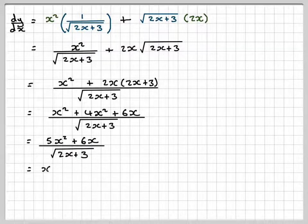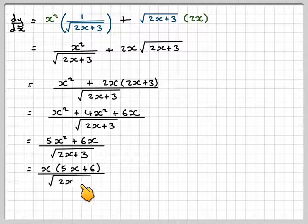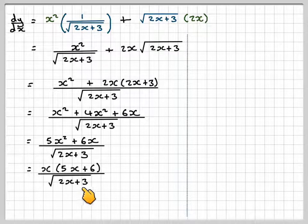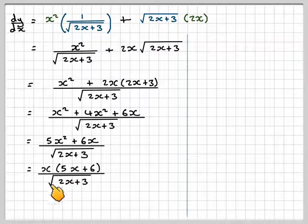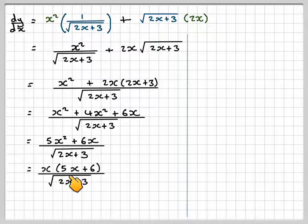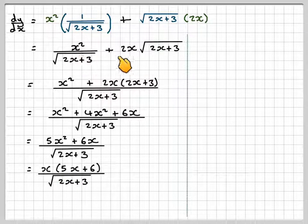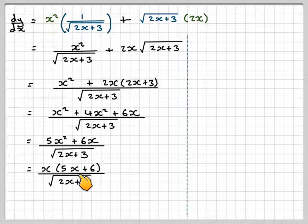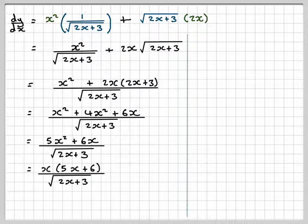So x squared plus 4x squared gives me 5x squared plus 6x over the square root of 2x plus 3. Taking out a common factor of x, we get x times 5x plus 6 over the square root of 2x plus 3. Now we didn't actually have to put our value of x, a half, into here. We could have just put it into here, but this shows you what to do in case you had to actually simplify it.